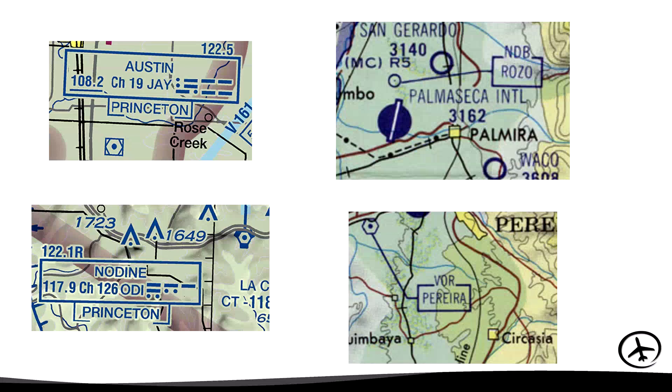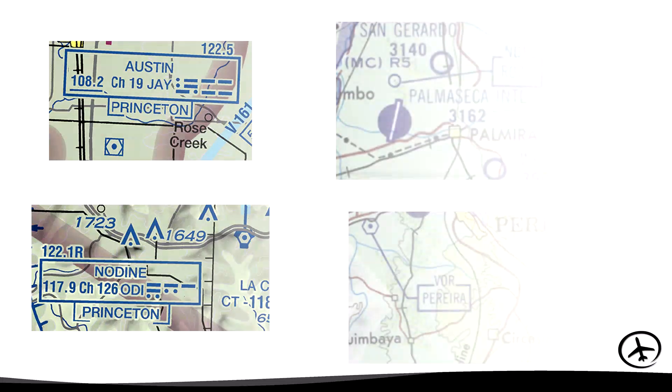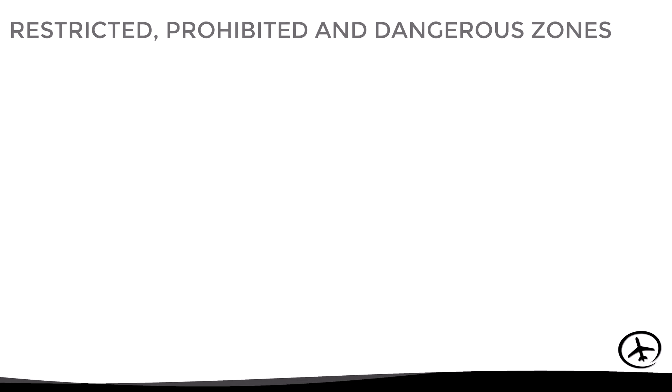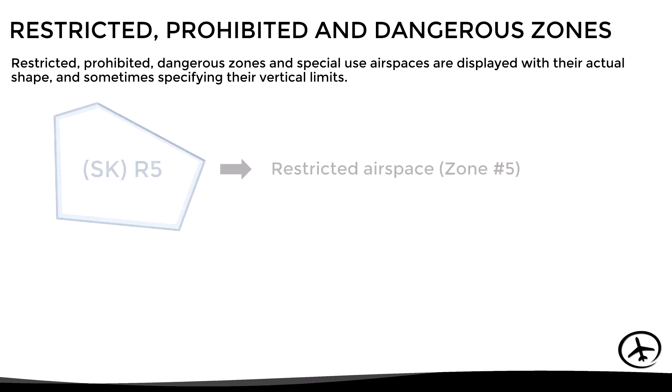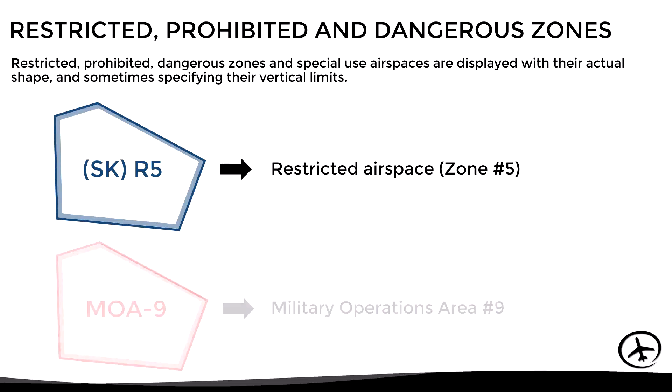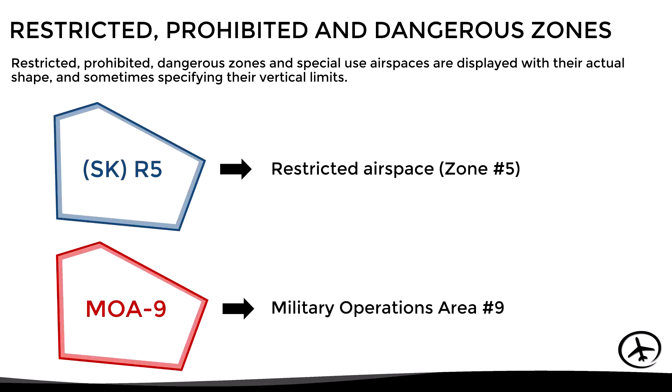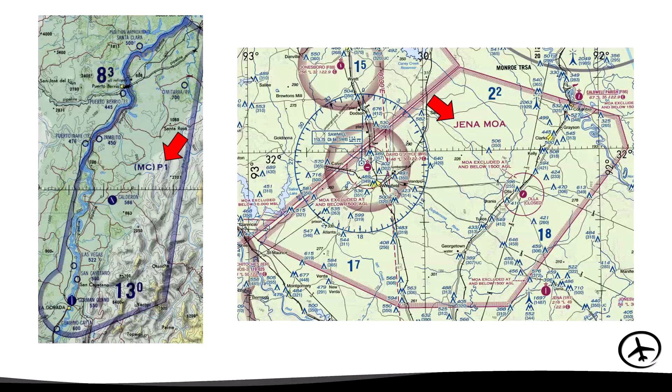Another element found in VFR navigation charts are restricted, prohibited, dangerous, and special use airspaces, which are depicted with their actual shapes and sometimes specifying their vertical limits. Here we can see some examples of these airspaces.